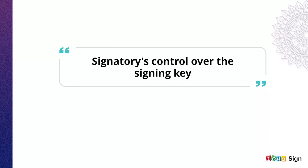The second requirement is that, at the time of signing, the signing key has to be under the sole control of the signatory. Under Zoho Sign's Aadhaar eSign feature, the user has the option to enable OTP either via SMS or email. If this feature is enabled, the signatory can complete the signing process only if they enter the OTP before affixing the signature. The OTP will be sent to the mobile number linked to your Aadhaar, ensuring that the signature is secure and under the control of the signatory at the time of signing, thus satisfying the second requirement of a valid electronic signature under the IT Act of 2000.